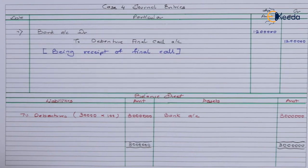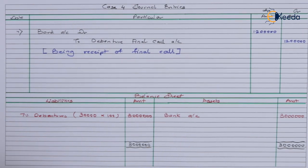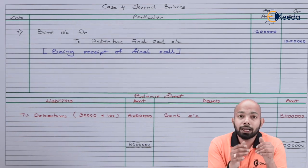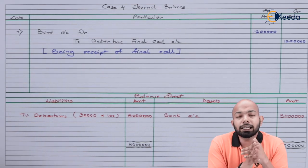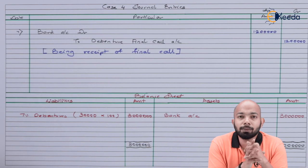With this we come to the closure of this illustration and mark the end of this chapter's section on issue of debentures for normal consideration. The next topics to be covered will be collateral security and consideration other than cash. I hope this video has given you clarity about how exactly issue of debentures can be dealt with through different journal entries. Thank you for watching — stay tuned with Ikeda and keep subscribing.